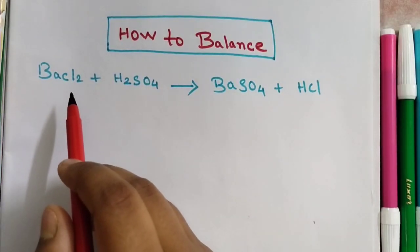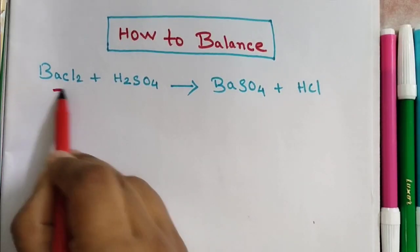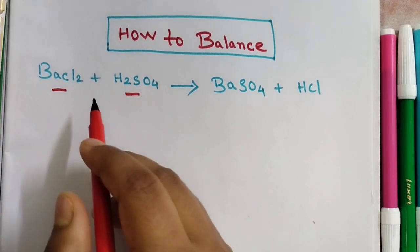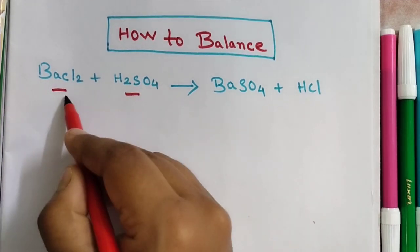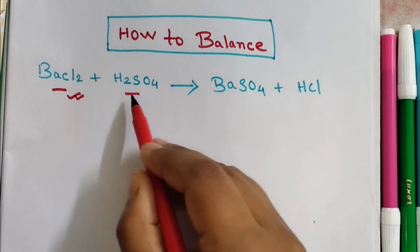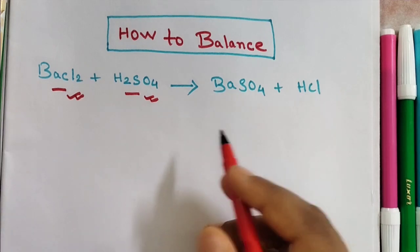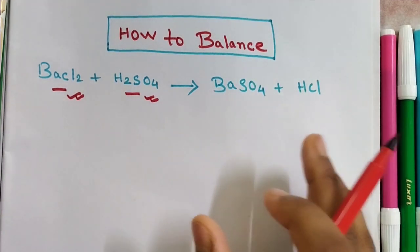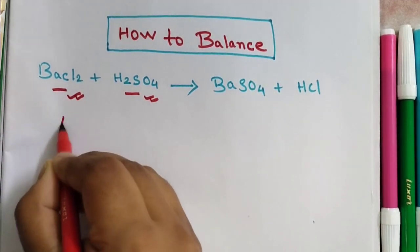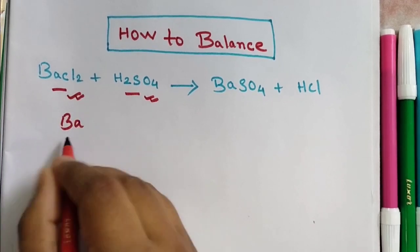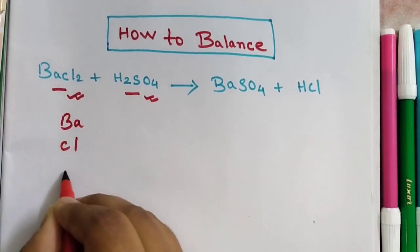In this video, I'm going to balance this chemical equation. In this reaction, this is barium chloride plus sulfuric acid. First of all, we need to count the number of atoms for each element: Ba, Cl, hydrogen, sulfur, and oxygen, similarly for the right-hand side.